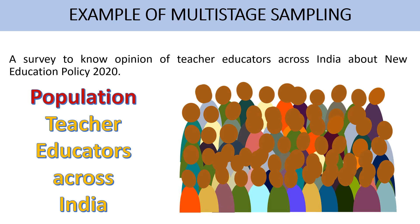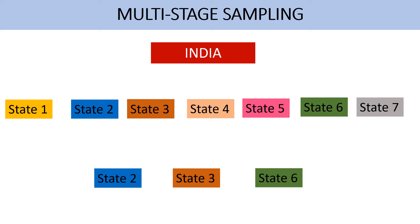Let's understand this through an example. I am taking the same example which I used in my video on cluster sampling, but here the population size is bigger. A survey to know the opinion of teacher educators across India about the new education policy 2020. So my population here is teacher educators across India. In this example, it is not feasible for me to use simple random sampling as my population is widely spread across India. So I have divided my population into different clusters state-wise. Different states will be my clusters — these are pre-existing groups.